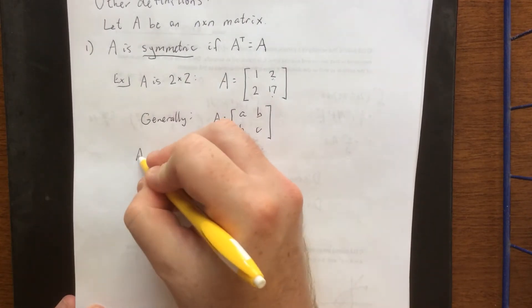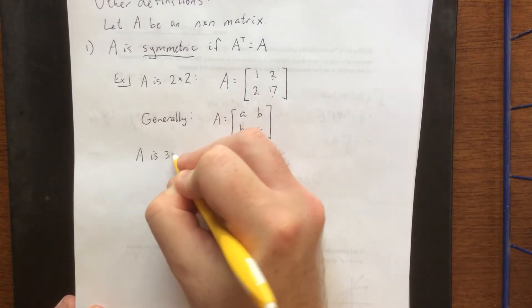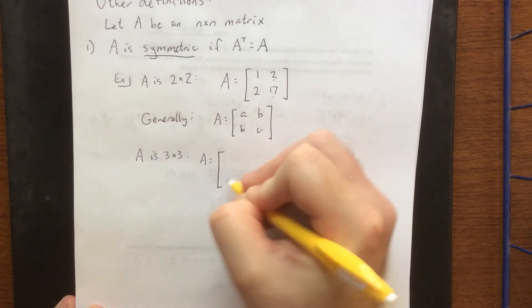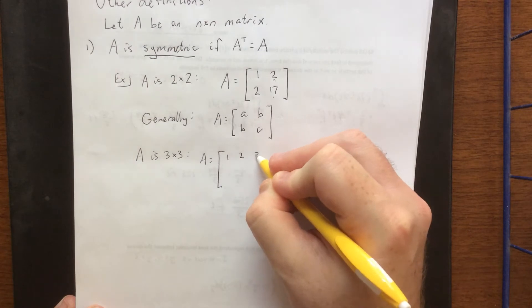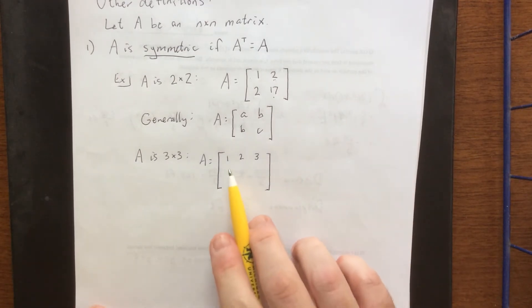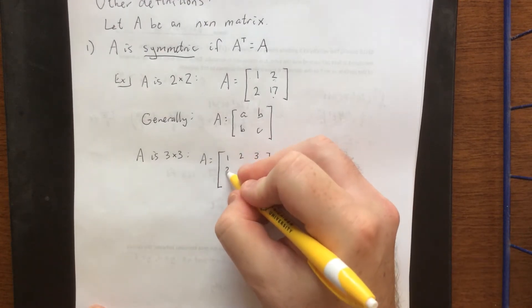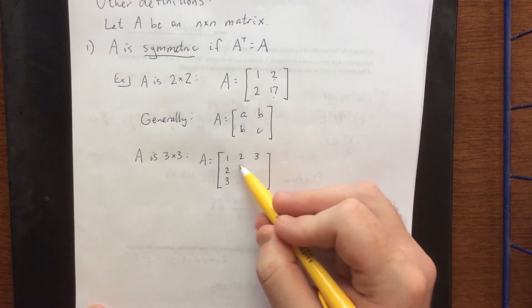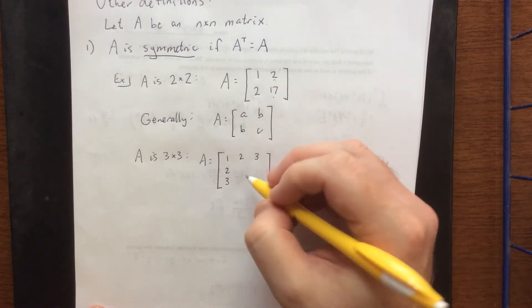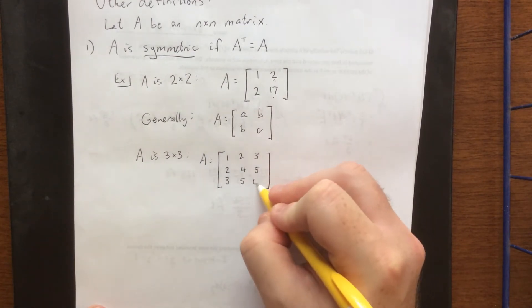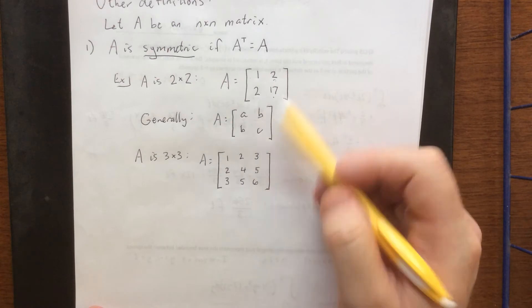Now if we were to bump it up to a 3 by 3, an example might be something like first row can be anything. We'll just do 1, 2, 3 because again not particularly creative. If the first row is 1, 2, 3, then the first column has to be 1, 2, 3 as well. Now what that leaves us with is another little 2 by 2 matrix here that would need to be symmetric as well. So we'll say 4, 5, 5, and 6 following the same scheme as what we saw previously.